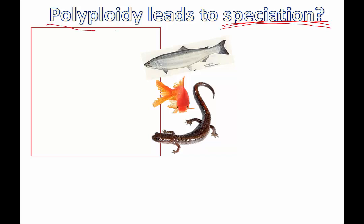The word polyploidy should sound familiar because you know the words diploid and haploid — diploid meaning 2n and haploid meaning n. Gametes are n and body cells, or somatic cells, are 2n.